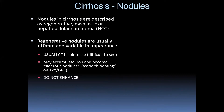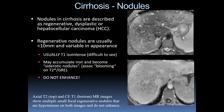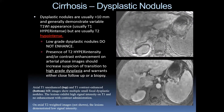Let's talk about nodules in cirrhosis. You can have regenerative nodules, dysplastic nodules, or hepatocellular carcinoma. Regenerative nodules are usually less than a centimeter, variable in appearance, some accumulate iron becoming siderotic nodules with blooming artifact on T2* and gradient imaging — these don't enhance. Dysplastic nodules are usually greater than a centimeter, typically T1 hyperintense but T2 hypointense. Low-grade dysplastic nodules do not enhance. The presence of T2 hyperintensity and/or arterial phase contrast enhancement should raise suspicion of transition to high-grade dysplasia, warranting close follow-up or biopsy.